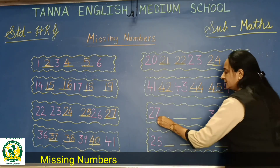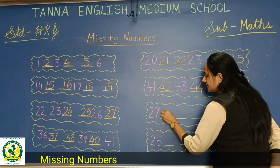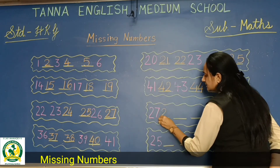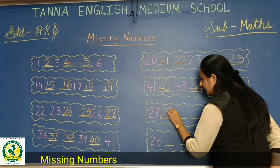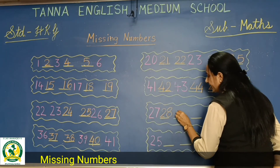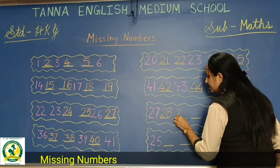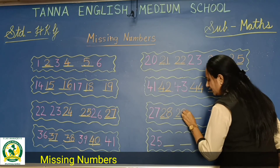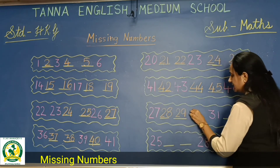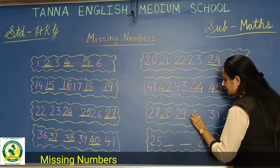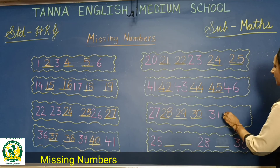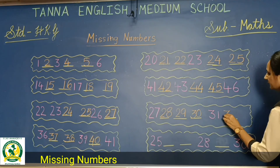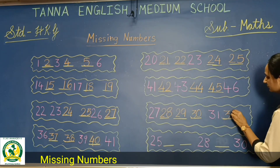Then here it is 27. So write here 28. Then 29, 30, 31, 32.